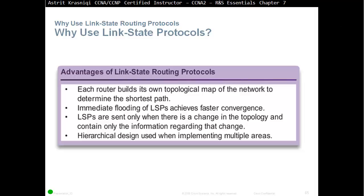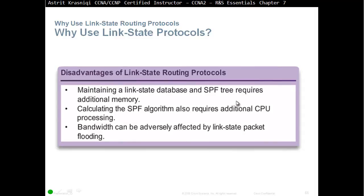Hierarchical design is used when implementing multiple areas. Some disadvantages of link state routing protocols: the topology table that must be kept and maintained requires additional memory — keeping an A-to-Z map of the whole network or every network in your area requires more memory. The calculation of the shortest path first algorithm also requires additional CPU processing to find the best path. Additionally, bandwidth can be adversely affected by link state packet flooding, as new link information is flooded to all neighbors, who then flood it to their neighbors.